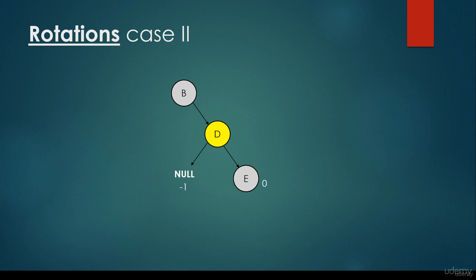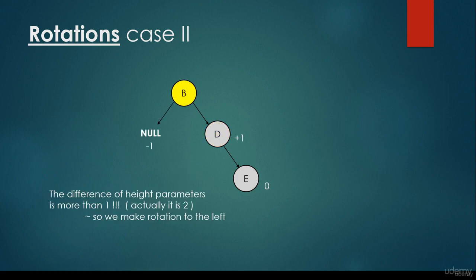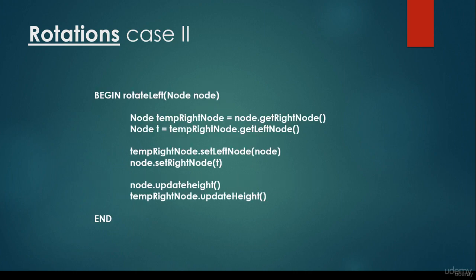Node D has a left child with height parameter minus 1, and E is a leaf node with height parameter 0 — this doesn't violate the AVL property. The difference between the height parameters doesn't exceed 1. For the root node, the left subtree has height parameter minus 1 and the right subtree has height parameter 1. The difference exceeds 1, so we have to make a rotation to the left. Node B, the root node, becomes the left child of its right child D, which becomes the new root node. In the pseudocode, instead of the left child, we get the root node's right child, set this temporary right node's left child to equal the previous root node, and update the height parameters.